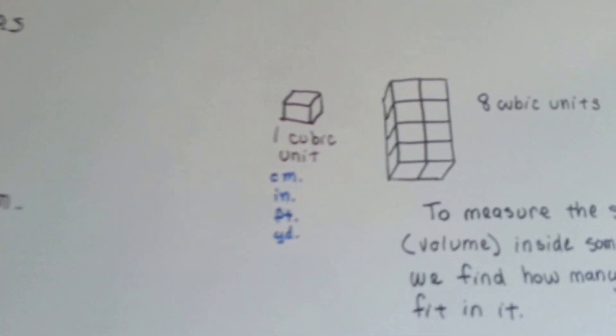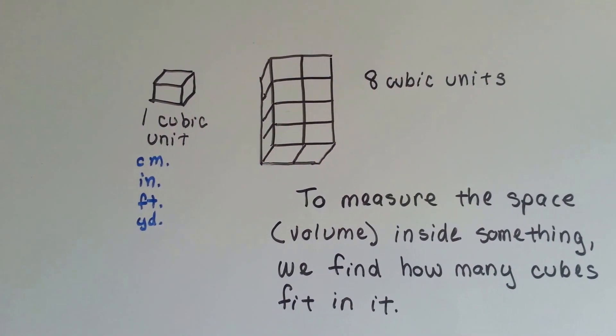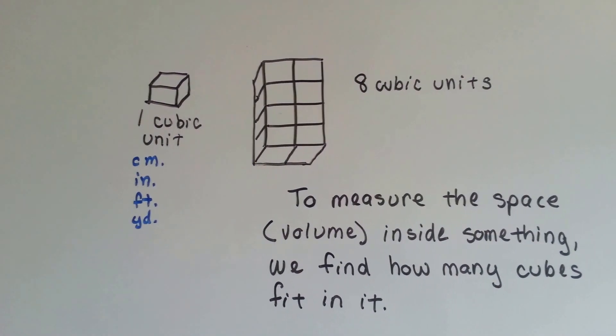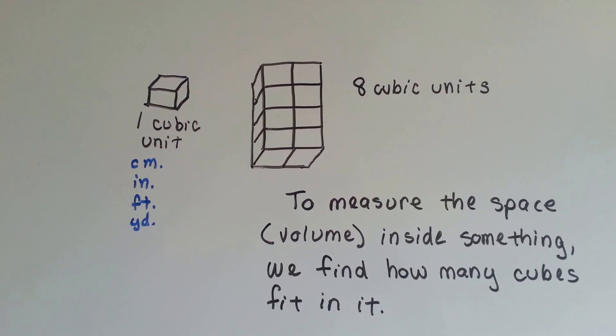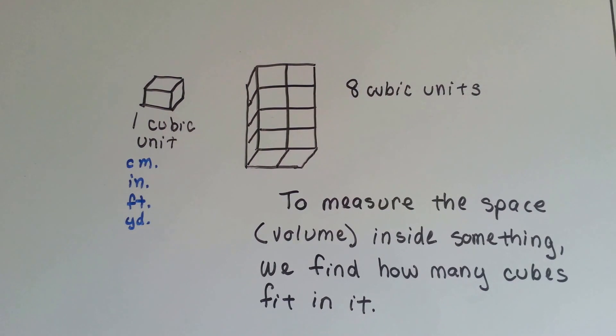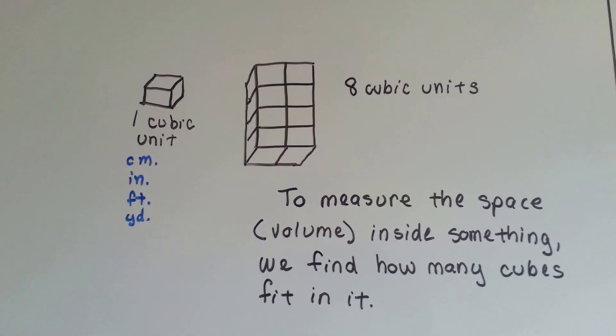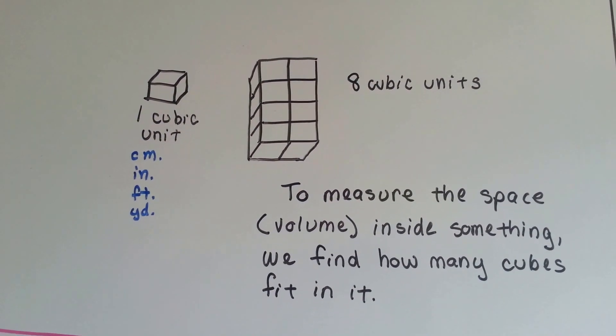So remember, a cubic unit is one unit that is either centimeters, inches, feet, or yards in all directions. In length, width, and height, it's that same measurement. And if we had 8 cubic units, that would be the volume. To measure the space, the volume inside something, we find how many cubes fit in it. A quick little review.